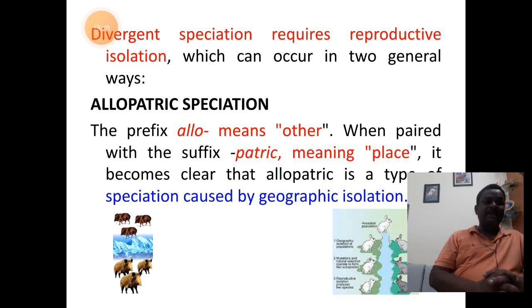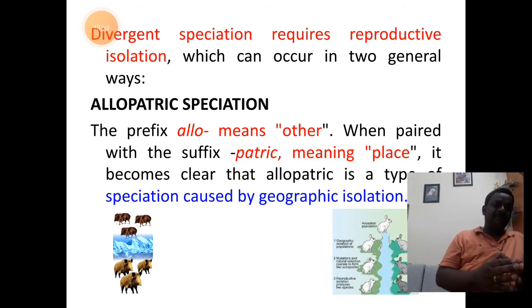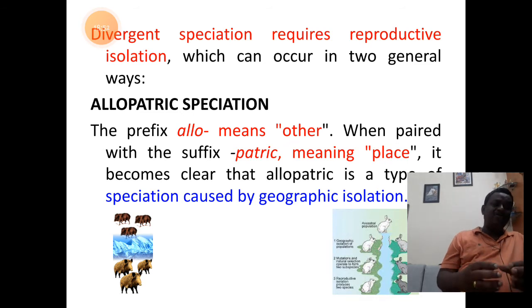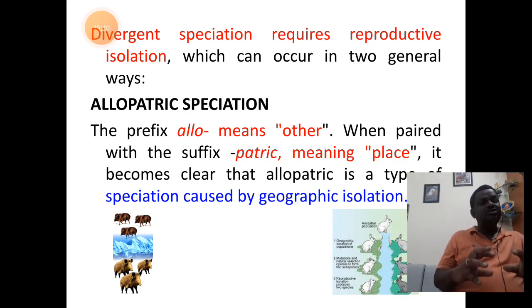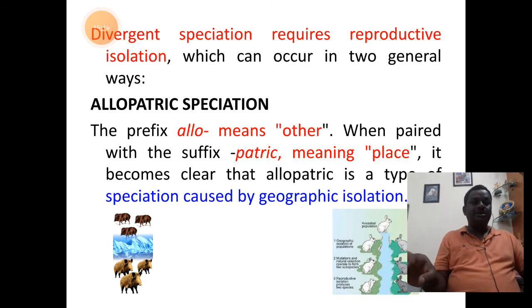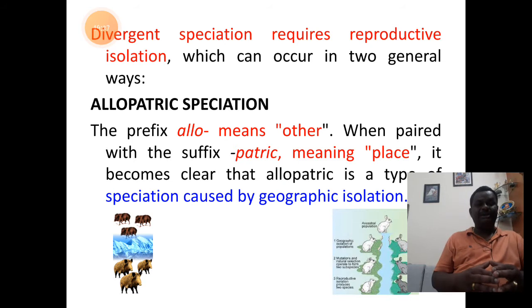The first one is allopatric speciation. Students, remember the term: 'allo' means different, and 'patric' means the land or simply a place. So in allopatric speciation it requires two geographical places for a species to form — the organisms need to get into two different areas to become a new species. In simple terms, this type of speciation is caused by geographical isolation or geographical barriers.